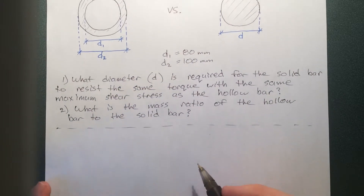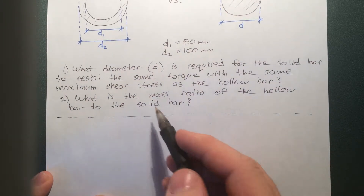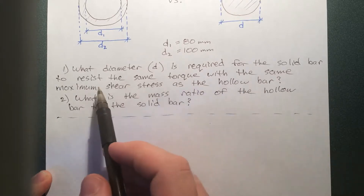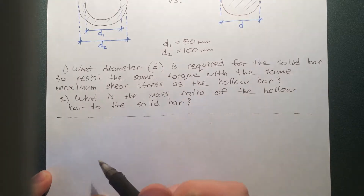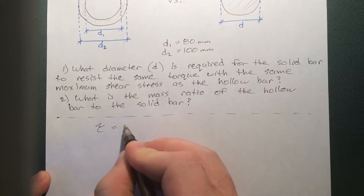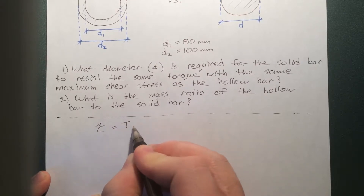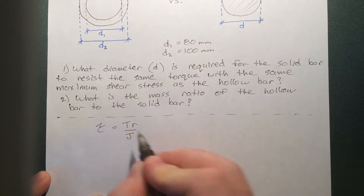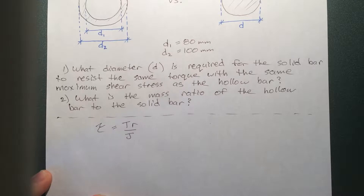We know that shear stress equals torque times radius over polar moment of inertia. Because we want to resist the same torque with the same maximum shear stress, if we want them to be the same, we need to equate those two expressions.